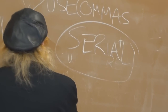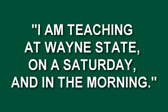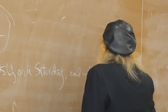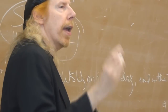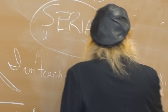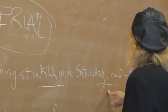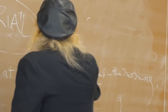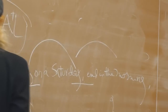For example: 'I am teaching at Wayne State on a Saturday and in the morning.' What I've done is put a comma after each element of the sentence — after Wayne State, after Saturday. So there are three elements separated by commas.